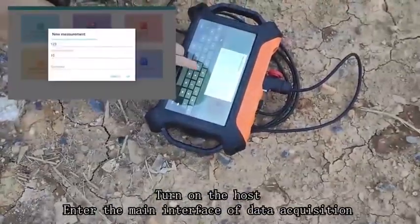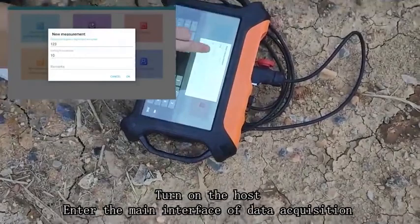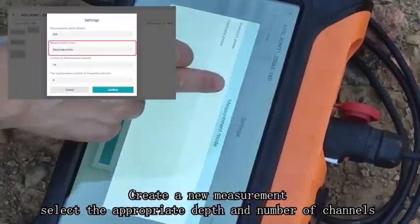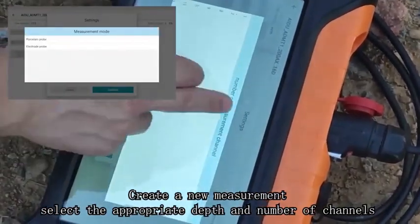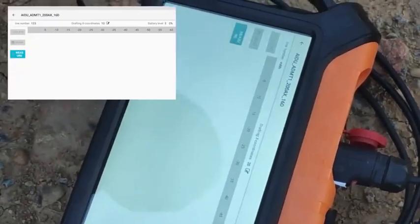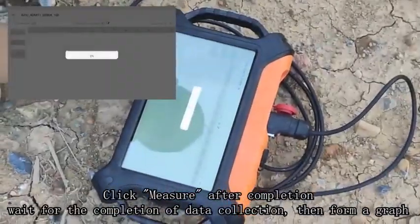Enter the main interface of data acquisition. Create a new measurement. Select the appropriate depth and the number of channels. Click measure after completion.